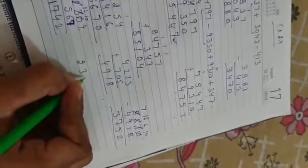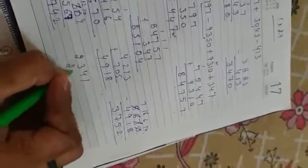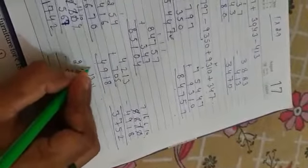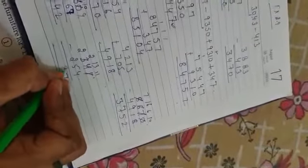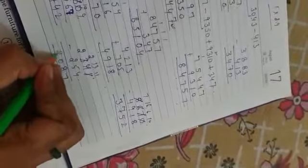And the other statement is 2341 minus 254. 11 minus 4 is 7, 8, 0 and 2.